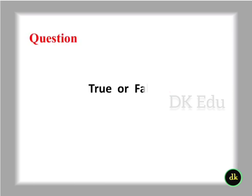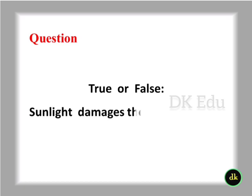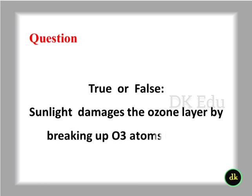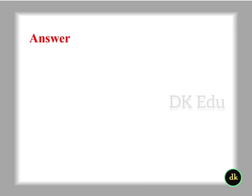True or false? Sunlight damages the ozone layer by breaking up O3 molecules into O2 molecules. True.